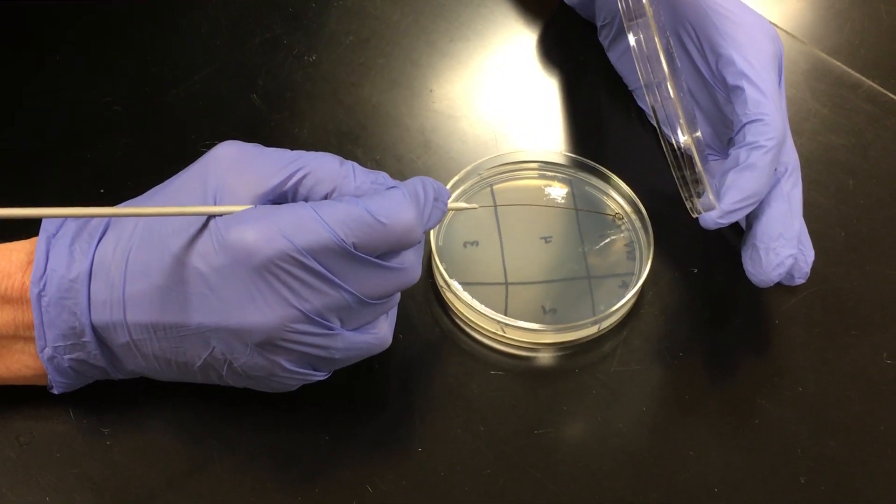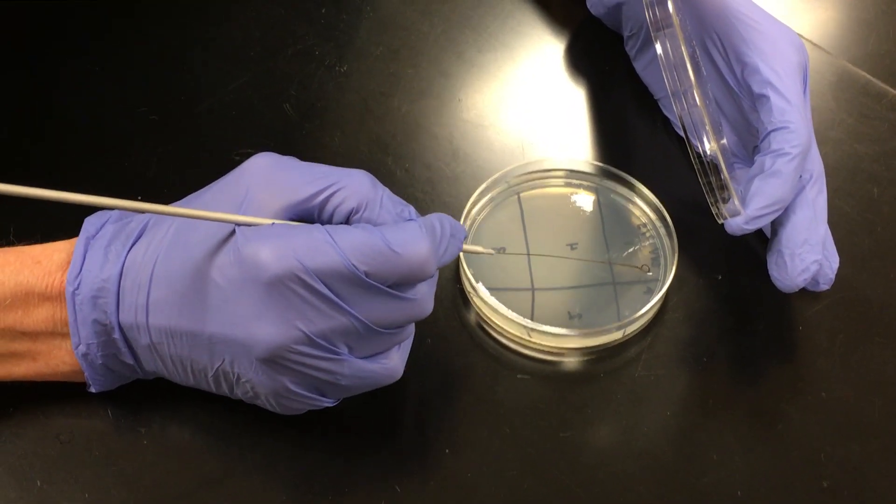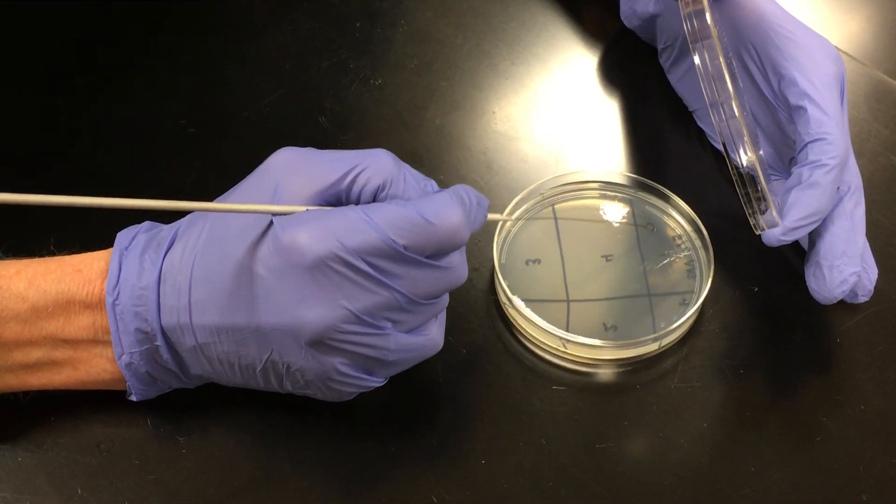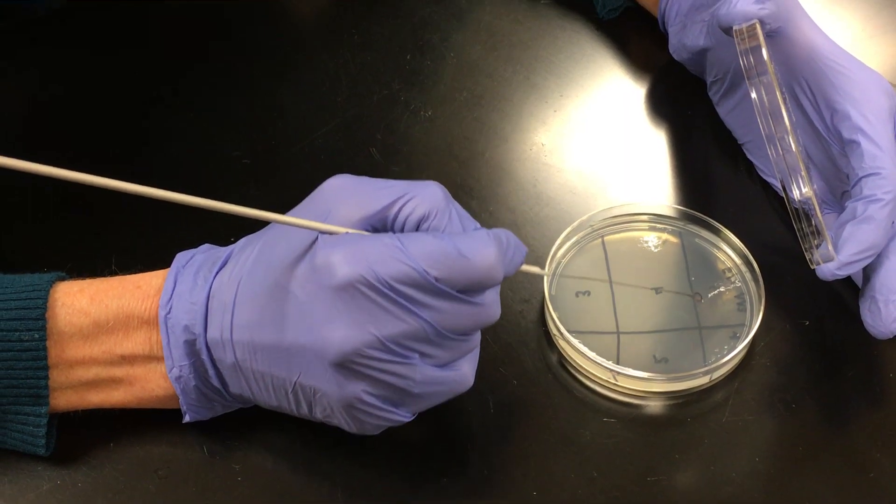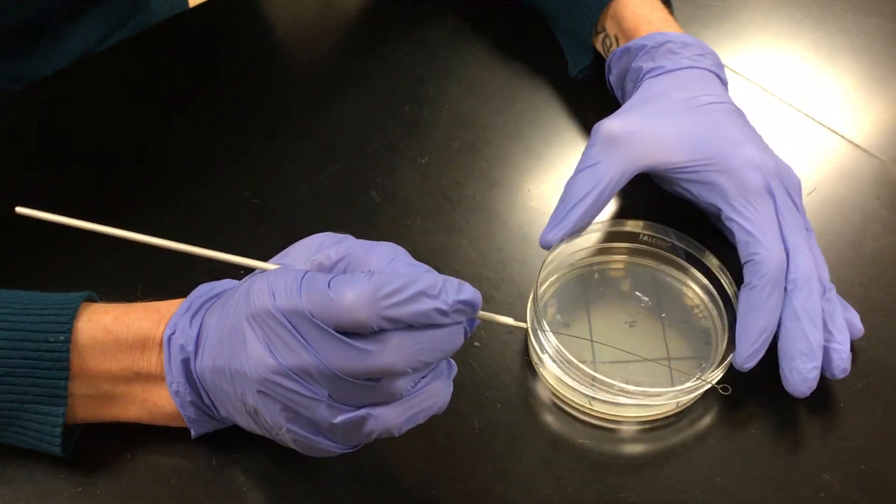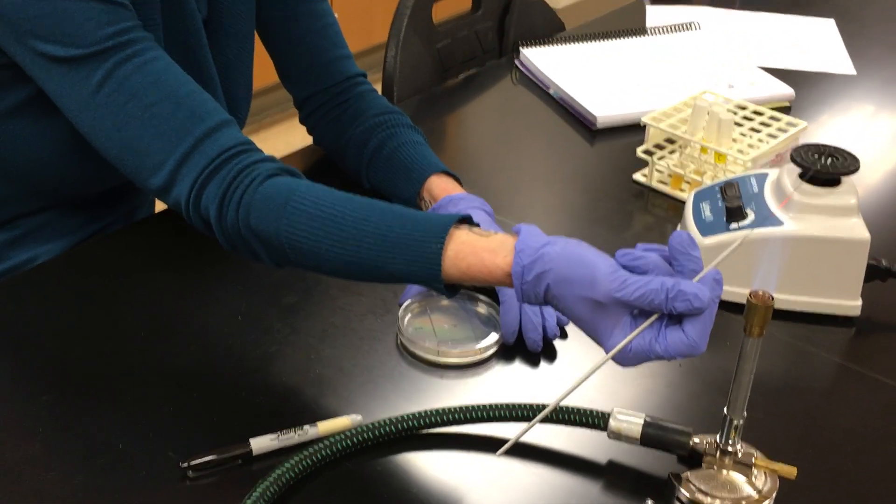And I'm going to start up here at the top and gently touch my loop to the agar surface. And then I'm going to start streaking. And I never want my lines to cross over one another. I'm just going to go back and forth. One, two, three, four, five times. And then I'm going to stop. You don't want to cross into any of the other quadrants.